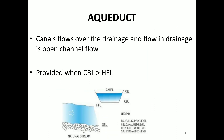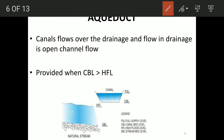The first type is the aqueduct. In an aqueduct, the canal flows over the drainage. The flow in the drainage below is open channel flow. The canal bed level is above the stream's high flood level.